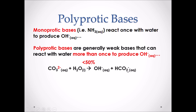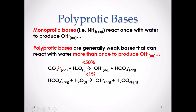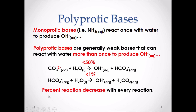HCO₃⁻ can still gain another hydrogen, so it reacts with water again, forming OH⁻ and H₂CO₃. Once it has two hydrogens in its chemical formula there is no more negative charge, meaning it cannot gain another hydrogen. This reaction occurs less than 1%. Again, the percent reaction decreases with every reaction — since it was a weak base, it reacts less than 50% in the first step, and the products are less than 1% in the second.